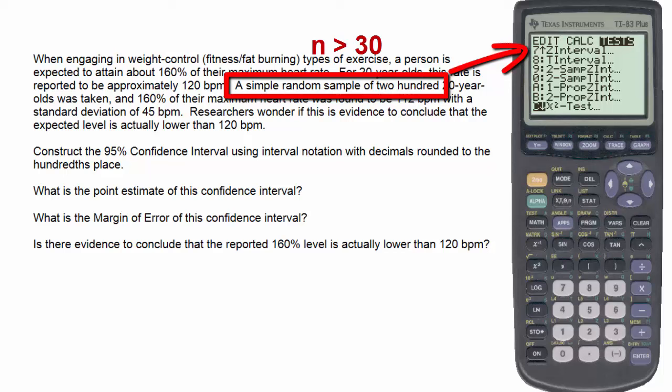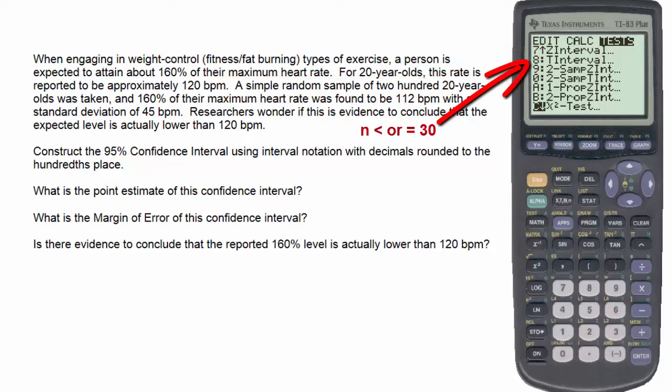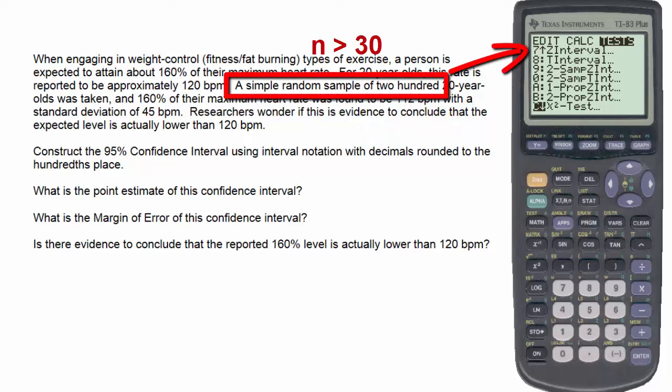we can use number 7, the Z-interval. For sample sizes of 30 or less, or when the data is given in a list of data, we would use a T-interval. So therefore, we choose number 7.